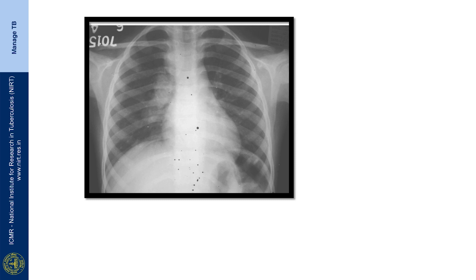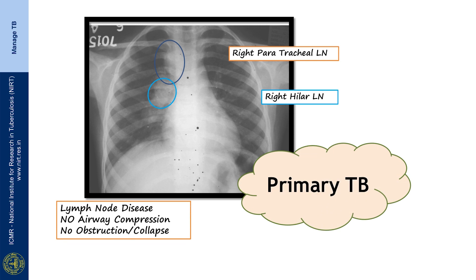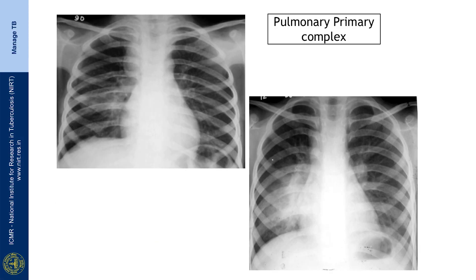In primary disease, children often have a lymph nodal component which may be paratracheal or in the hilar area. Right paratracheal and right hilar lymph node is suggestive of primary TB. This lymph nodal component may sometimes be associated with parenchymal disease, or the parenchymal disease may be more prominent than the lymph node component. It is also possible to have contralateral lymph node disease along with parenchymal lesion on the other side — also suggestive of a primary complex.